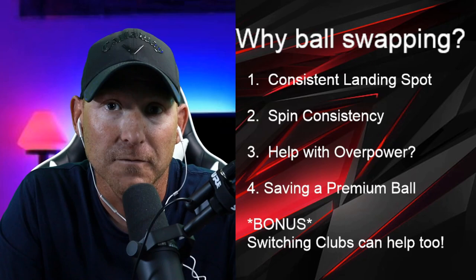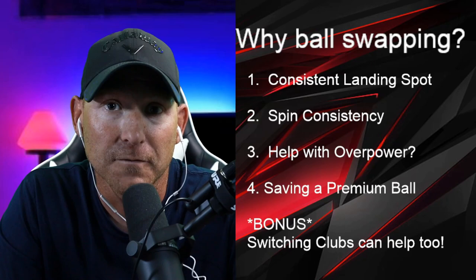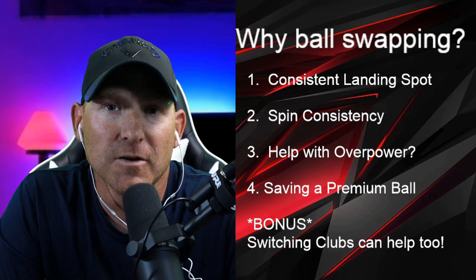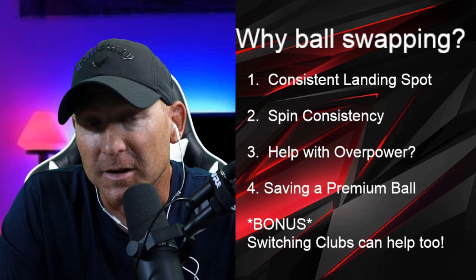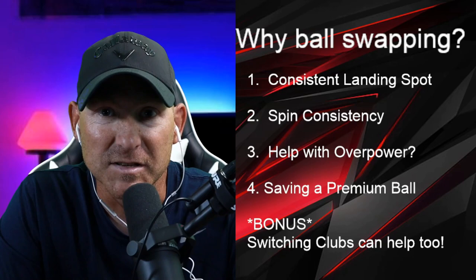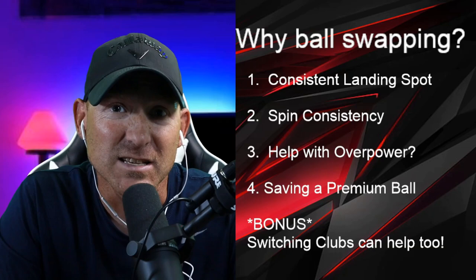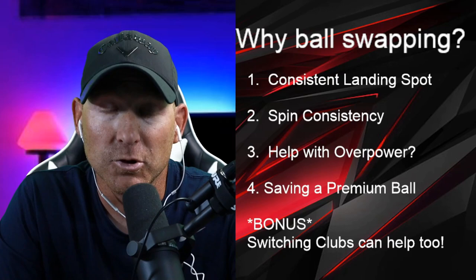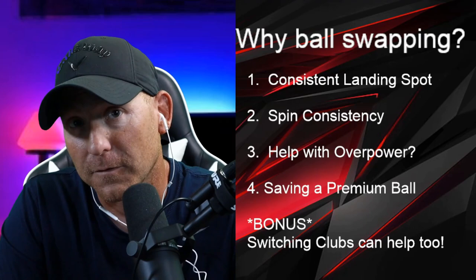I do that all the time when playing rounds — I save those power zero wind five balls until I really need them, using power one wind five balls instead. There's also a bonus tip: you can set up your shot with one club and switch to a completely different club with better capabilities. All of this is about landing spot consistency. Remember, you can only use this technique off the tee — par four, par five, or par three in tournament play.